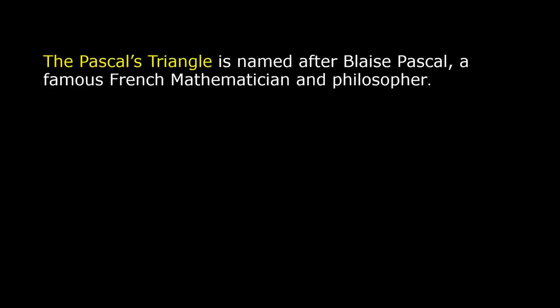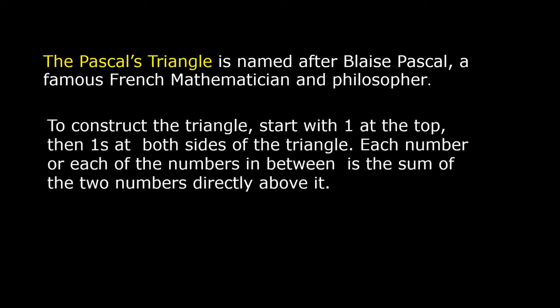Pascal's Triangle is named after Blaise Pascal, a famous French mathematician and philosopher. To construct the triangle, start with 1 at the top, then 1 at both sides of the triangle. Each of the numbers in between is the sum of the two numbers directly above it.